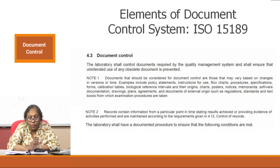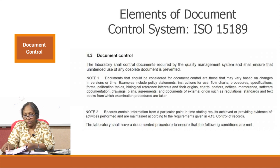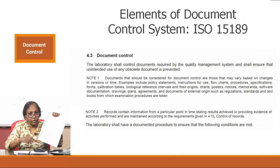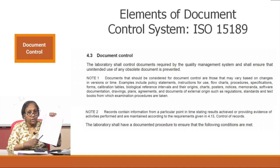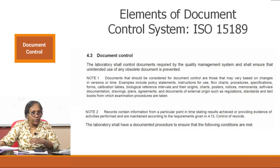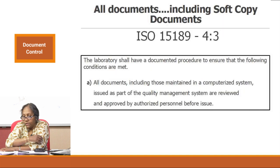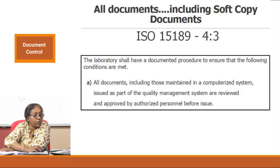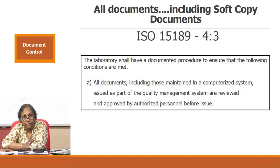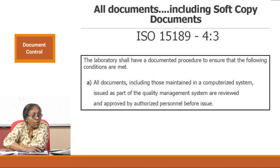If you want to look at the elements of your document control system, the standard defines how to do document control under clause 4.3. The first point is that a laboratory shall have a documented procedure to establish that all documents - including those maintained in a computerized system - issued as part of the quality management system are reviewed and approved by authorized personnel before use.